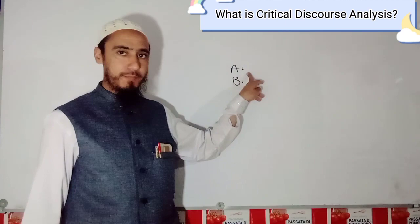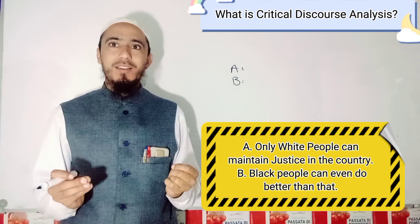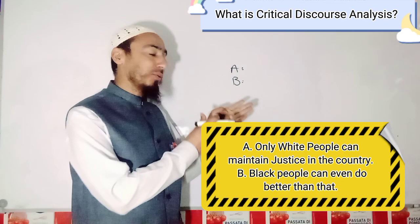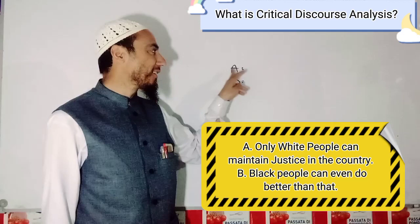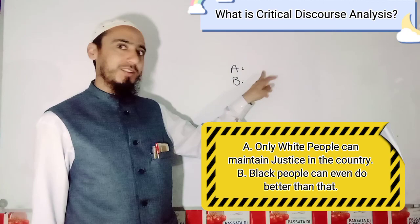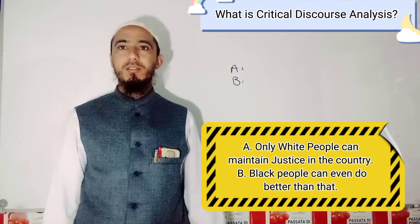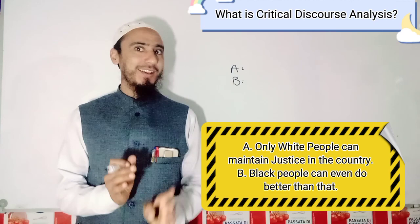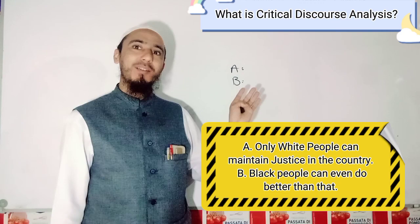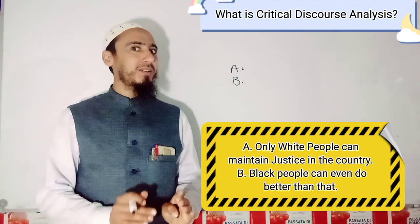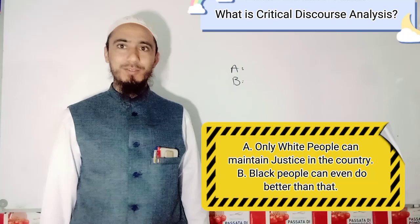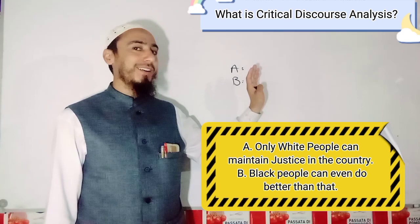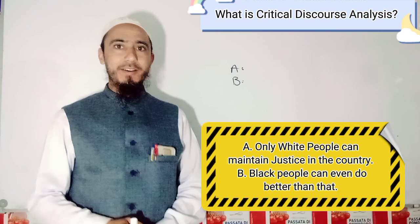Another example: Statement A says, 'Only white people have the capacity and ability to maintain justice in the society.' Statement B says, 'Black people have better capacity than white people.' Again you see here, racism is present — based on color. One group considers themselves better than another based on their color. So racism is there, and so many examples like this exist.